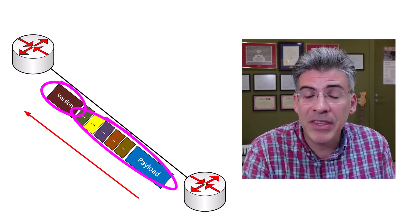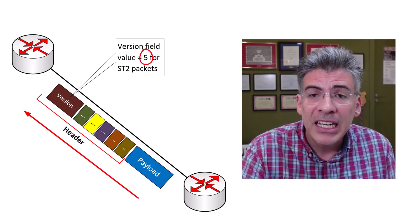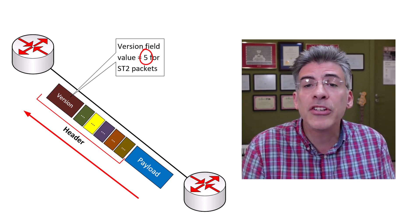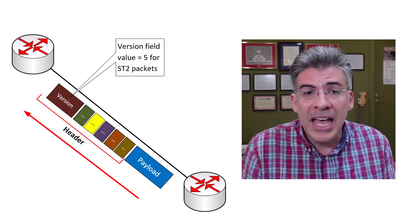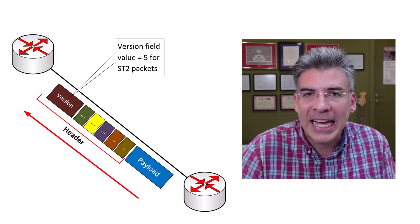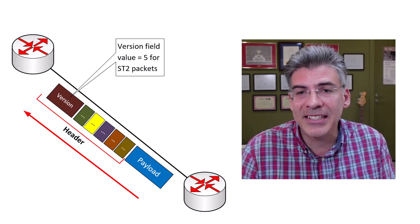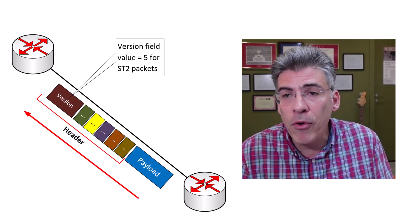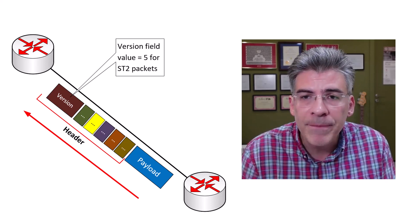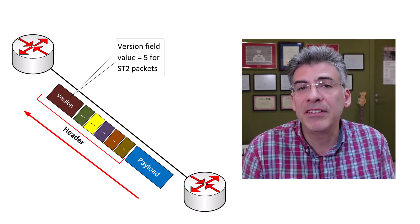Now, because ST2 packets have the same structure as IP packets, engineers decided to use the version number 5 in the version field to distinguish ST2 packets from IPv4 packets, so they can be interpreted and processed accordingly. As soon as the network device receives that first header value, it knows how to interpret the rest of the packet accordingly. So because the value of 5 has already been taken by the ST2 protocol, the successor to IPv4 thus had to be named IPv6 to eliminate any possible confusion about the actual protocol in use. Thus, the designation IPv5 was effectively skipped over.